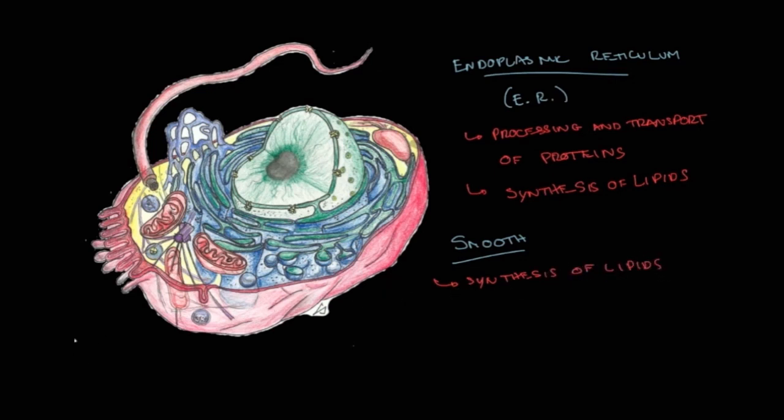And the second one is the rough ER. And it has its name, rough, because you can see lots of ribosomes, lots of little dots that looks like it's kind of rough surface. And ribosomes, as you know, probably, or you will know in later tutorials, are related to protein production or processing of proteins, because these structures are involved in translation.